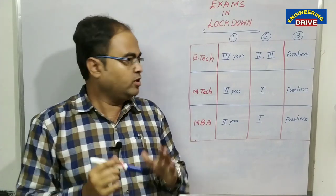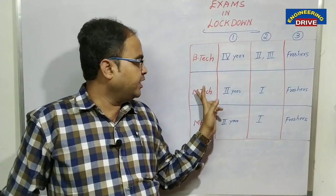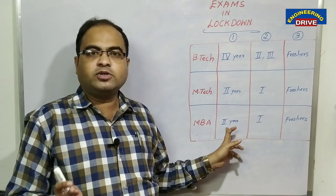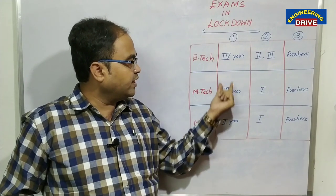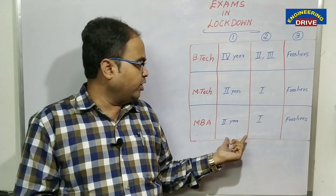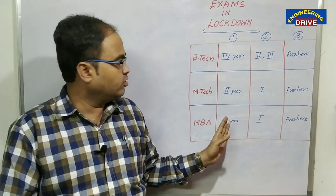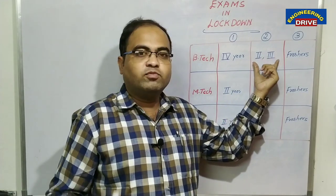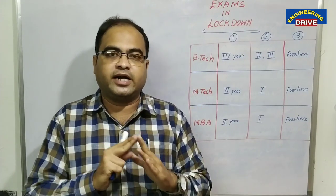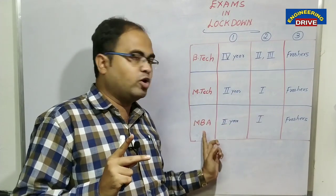In B.Tech, case number 1 is the 4th year. In M.Tech, case number 1 is the 2nd year. In MBA also, case number 1 is the 2nd year. Why? Because they are the pass-out batches — they are surely going to complete their B.Tech, M.Tech, and MBA this year, in 2020. Case number 2 covers 2nd year and 3rd year of B.Tech, 1st year of M.Tech, and 1st year of MBA.